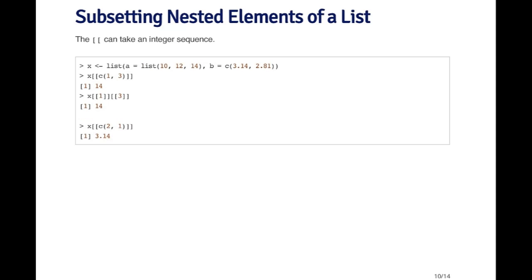The double bracket operator can also take an integer sequence, which causes it to recurse into the list. In this list, the first element a is itself another list with elements 10, 12, and 14. To extract the number 14 — the third element of the first element — I can pass the vector c(1, 3) to x using the double bracket operator, which is equivalent to double subsetting with [[1]] and then [[3]]. I can also extract the first element of the second element by passing the integer vector c(2, 1) to get 3.14.